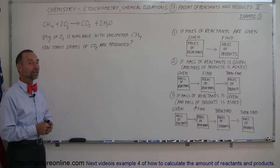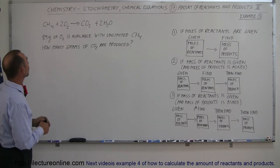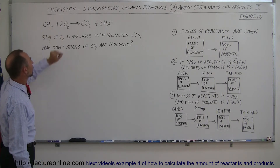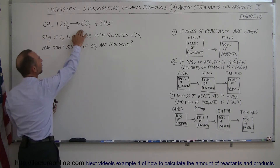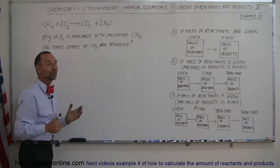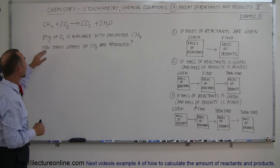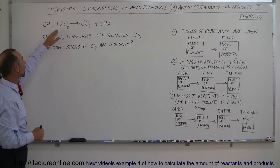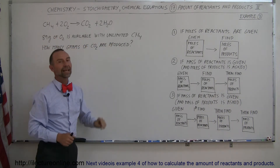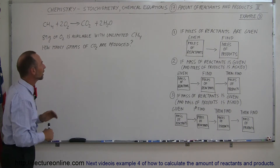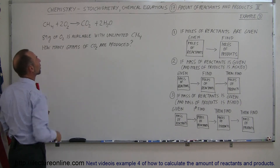Here we're going to take a look at something a little more complicated. The same old equation — methane with oxygen, a combustion reaction — we end up with carbon dioxide and water. The equation is already balanced for us, but here they're telling us we're starting with 89 grams of oxygen and that there's unlimited methane involved. They want to know how many grams of carbon dioxide are produced.